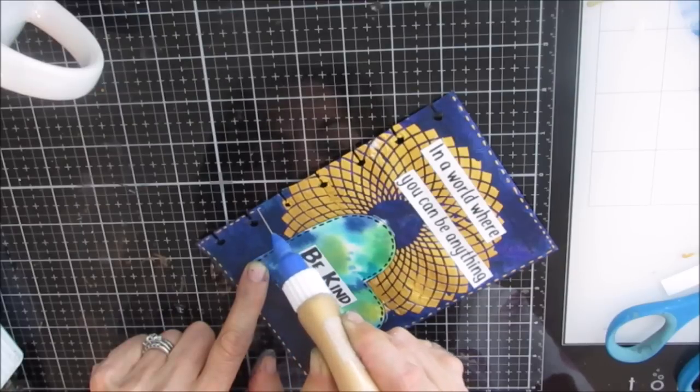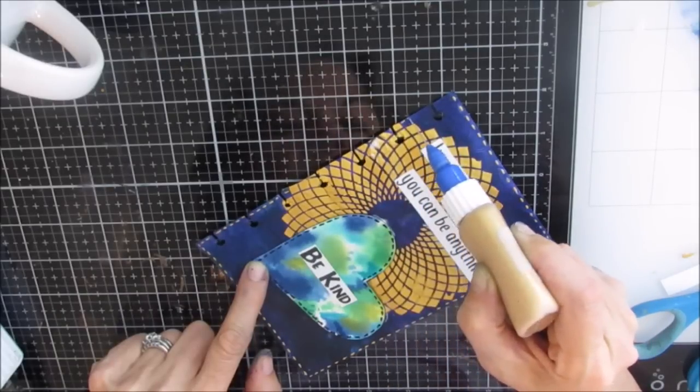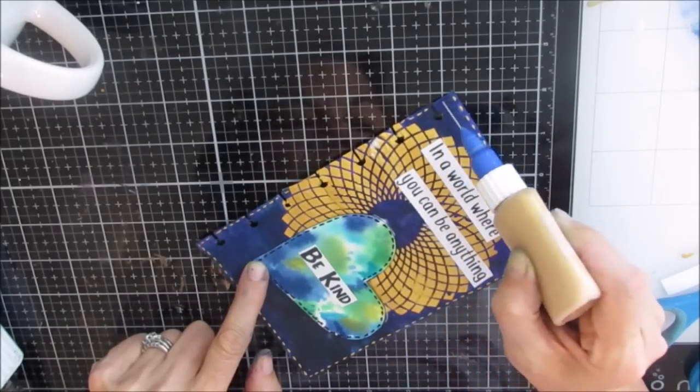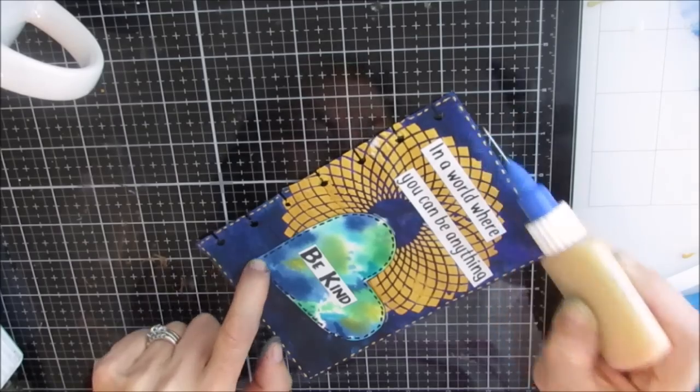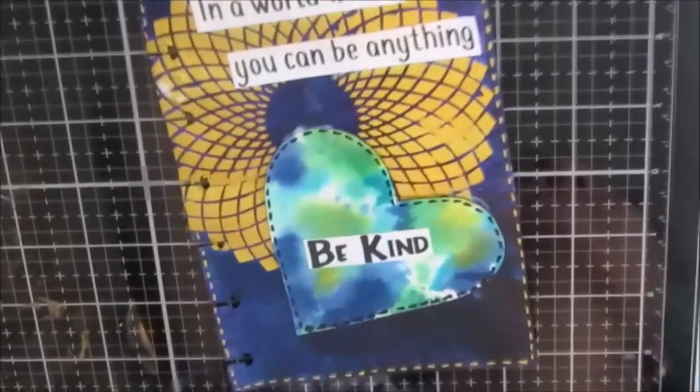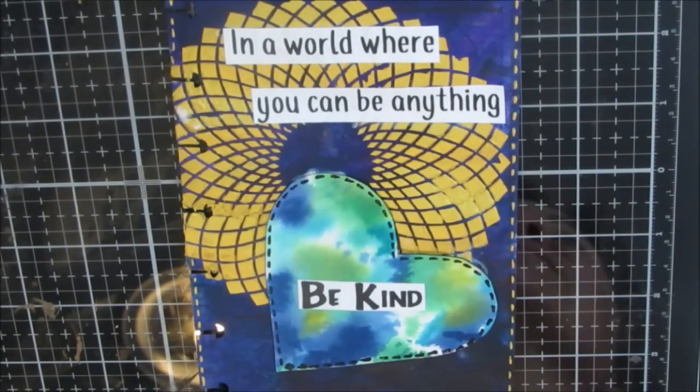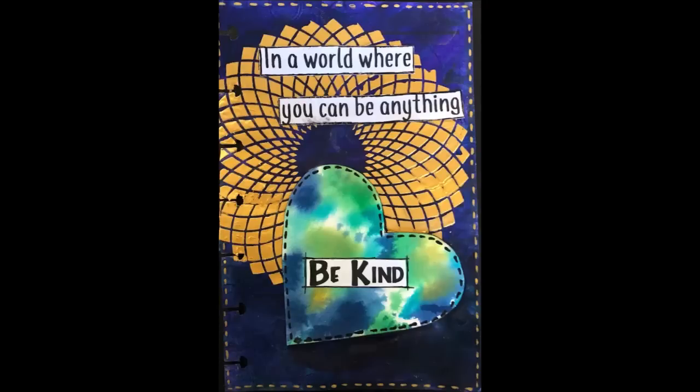Now just to recap, this page is going into my repurposed upcycled mini happy planner. I have a mini happy planner from last year that I had used and I gel printed on it or put a coat of gesso on the pages and they turn into lovely art journal pages. On here I also outlined around the sentiment. Thanks for watching, give me a thumbs up, leave a comment below. Bye!